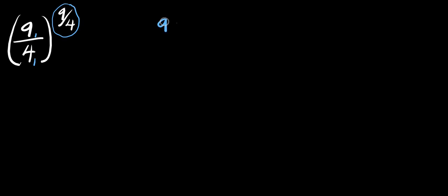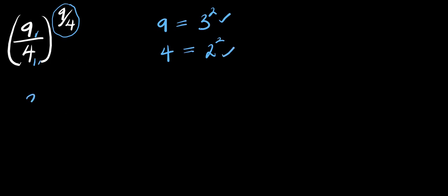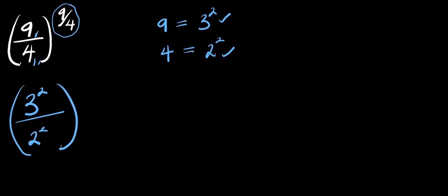Now remember, 9 is a perfect square which is 3 to the power of 2, and 4 is a perfect square which is 2 to the power of 2. So we are going to replace this 9 with 3 to the power of 2 and this 4 with 2 to the power of 2, so we have (3² / 2²) raised to the power of 9 over 4.